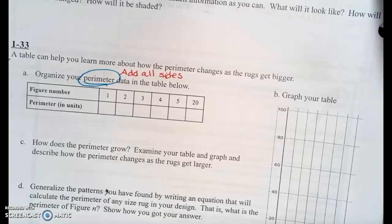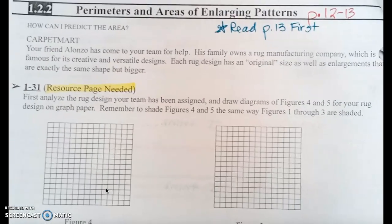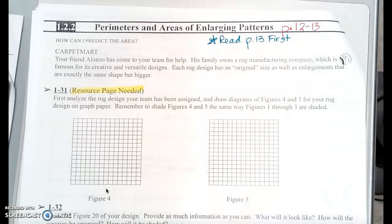Flip back over to the prior page, page 12, and we're going to look at what you're going to do with your little yellow piece of paper. It says Carpet Mart. Your friend Alonzo has come to your team for help. His family owns a rug manufacturing company which is famous for its creative and versatile designs. Each rug has an original size as well as enlargements that are exactly the same shape, but bigger. So for question 31, you're going to analyze the rug design your team has been assigned. Everybody's got a different rug, each team. You're going to draw figure 4 and figure 5 for your rug design on your graph paper. Remember to shade figures 4 and 5 the same way figures 1 through 3 are shaded. Your team is going to shade 4 and 5.